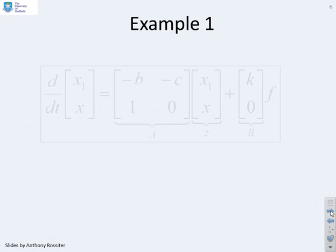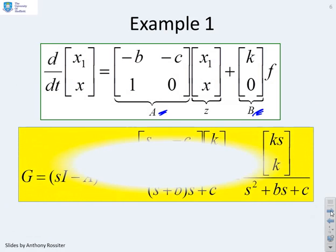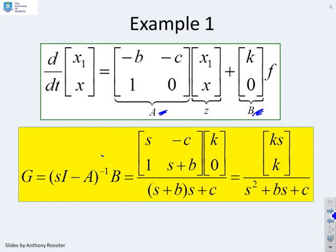An example then to illustrate this process. Here's a state space model. You'll see I've got my matrix A and my matrix B, and I want to put this into Laplace transforms. So I remind myself of the key expression: the transfer function to get both states is given by (sI - A)^-1 times B.